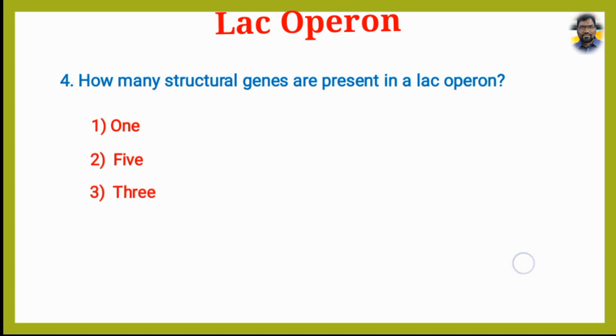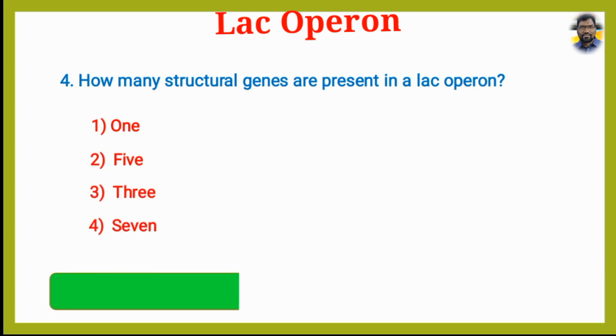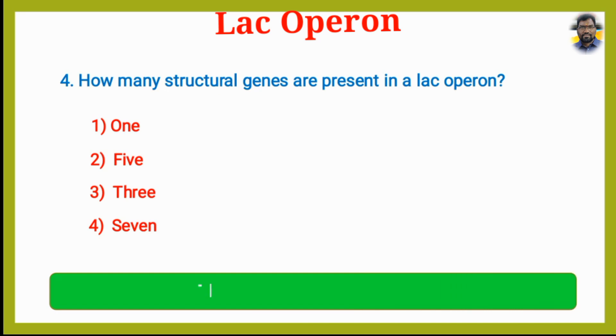How many structural genes are present in the Lac Operon? Option 1: 1. Option 2: 5. Option 3: 3. Option 4: 7. The answer is 3 structural genes are present in the Lac Operon. Those are Lac-Z, Lac-Y, and Lac-A.